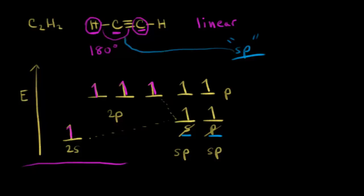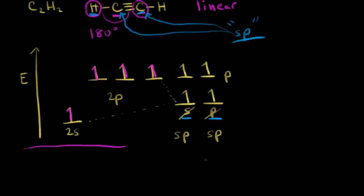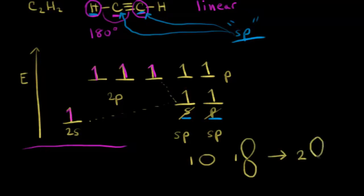This carbon is sp hybridized since it's bonded to two atoms, and so is the other carbon in acetylene. Let's think about the shape of our new sp hybrid orbitals. We know an s orbital is shaped like a sphere, and we took one p orbital shaped like a dumbbell. We hybridized these two orbitals together to give us two new sp hybrid orbitals. When we draw our picture we ignore the small back lobe and focus on the larger frontal lobe. When thinking about the percentage of s character, we used one s orbital and one p orbital.